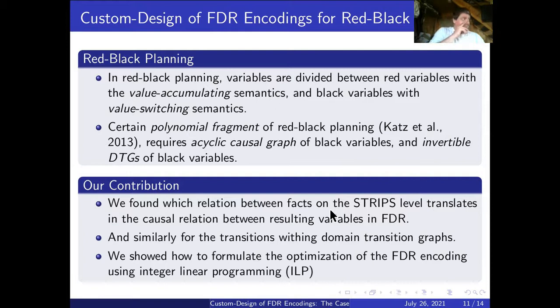In our paper we focused on red-black planning. In red-black planning we have two kinds of variables: red variables have value accumulating semantics or relaxed semantics, and black variables have value switching semantics as a standard semantics of the variables in FDR. In particular, we focused on a certain polynomial fragment of red-black planning that requires that the causal graph of black variables is acyclic and domain transition graphs of black variables are invertible.